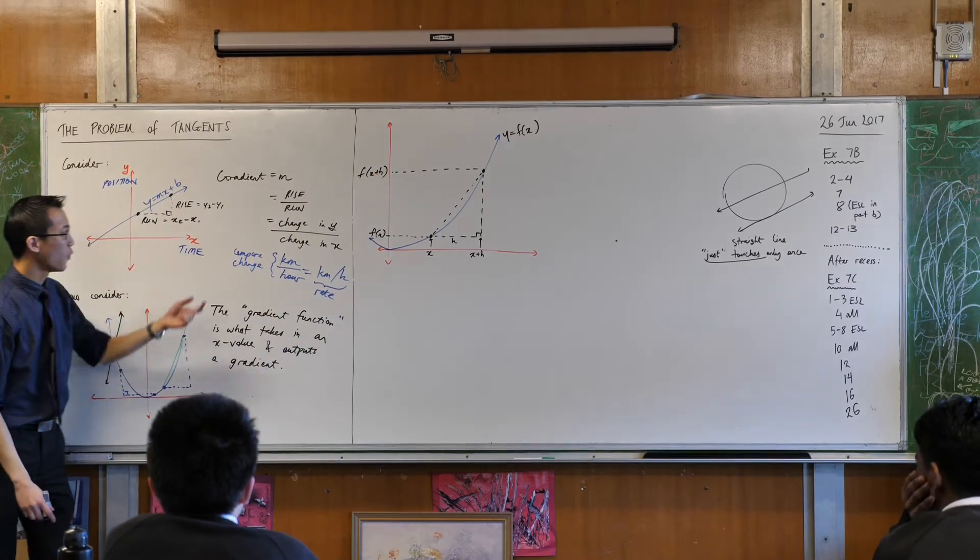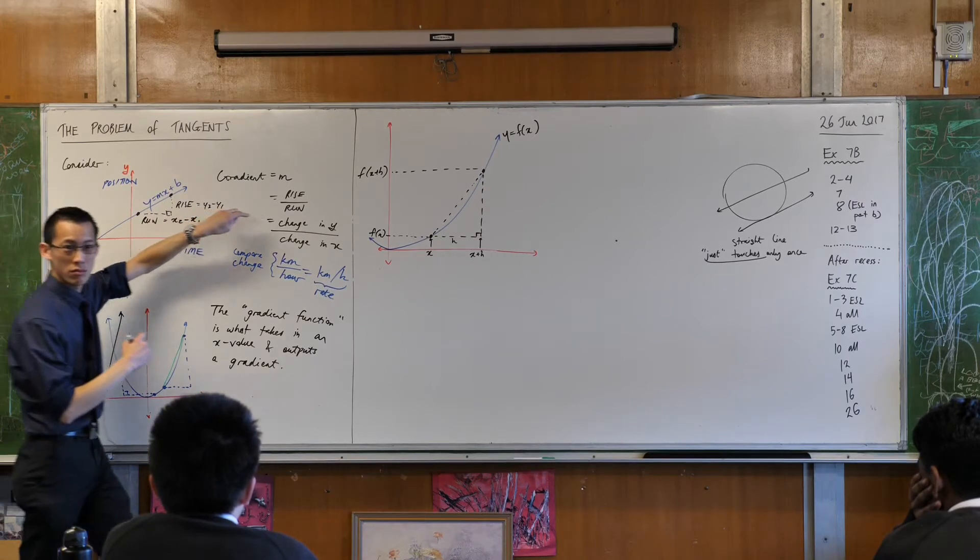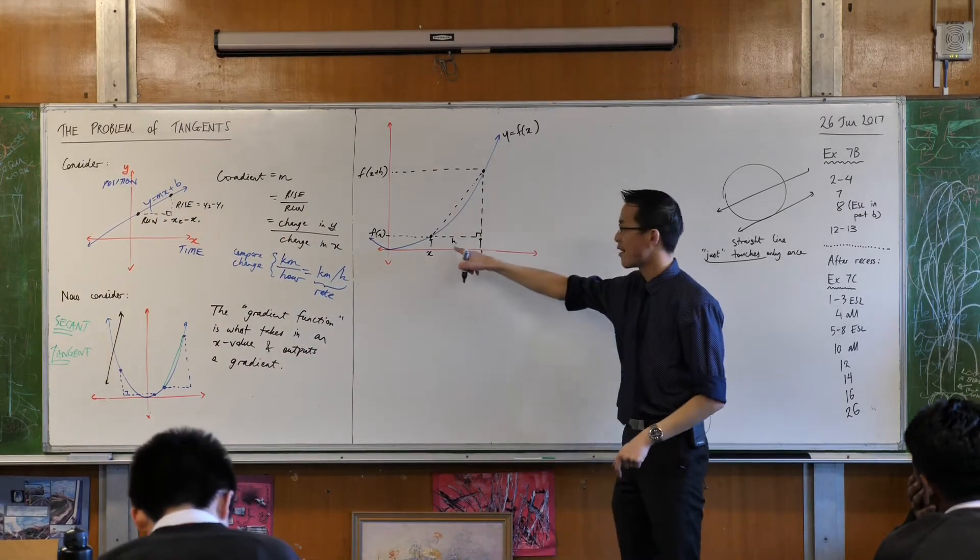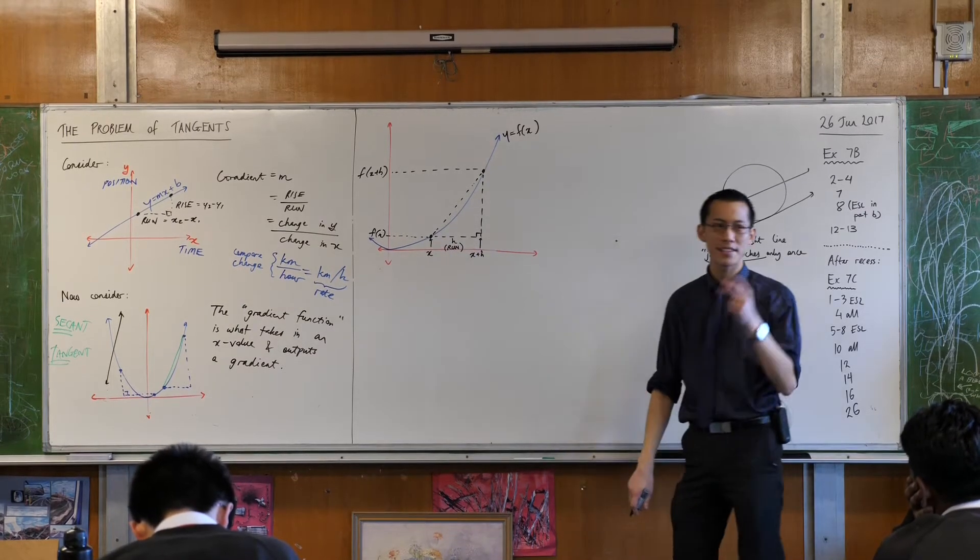Now, once you've got your two y coordinates, what do you do with them? You subtract, right? So I've got a run already. Here's my run. What's my rise in this case?